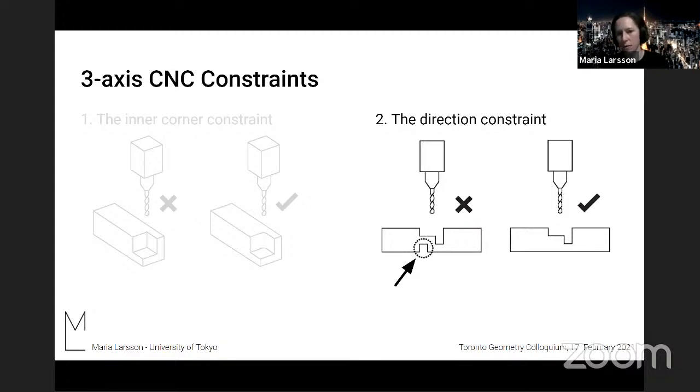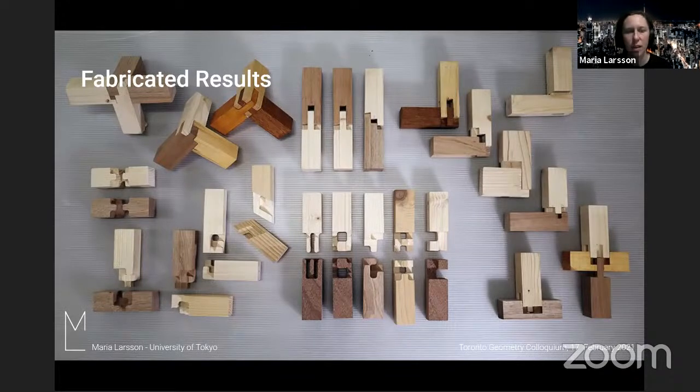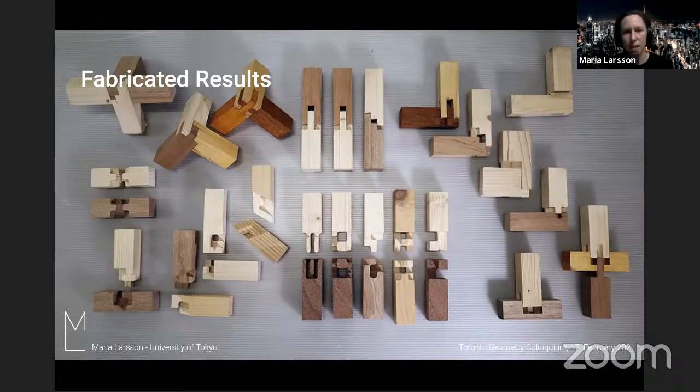And the second constraint is the direction constraint. So here it basically means you can approach the material from above, but you cannot cut somewhere where the access is blocked. And this gives that every fabricated geometry can be expressed as a height field. So this is something that we use to make the data structure more efficient. And finally, let me show some fabricated joints.